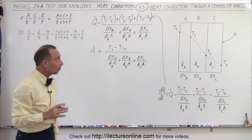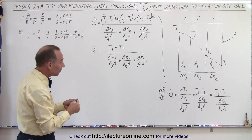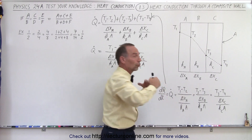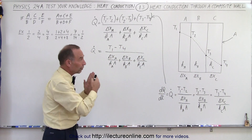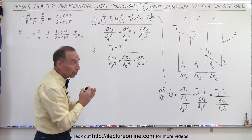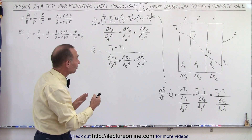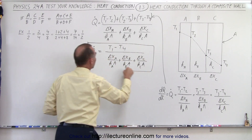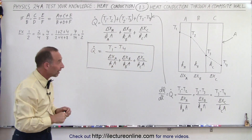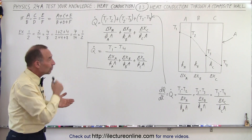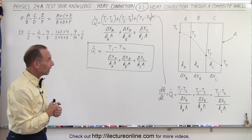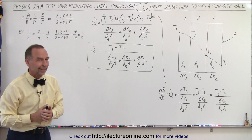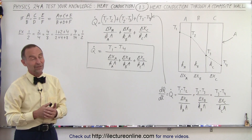The numerator is simply the difference between the temperature on the left side and the temperature on the right side — the total temperature difference. So regardless of the number of layers in the wall or the heat conductivity of each layer, the final equation Q-dot is simply equal to the difference in temperature from left to right, divided by the sum of the heat resistances of each layer independently. That's an easy way to write the equation and calculate heat flow through a composite wall.